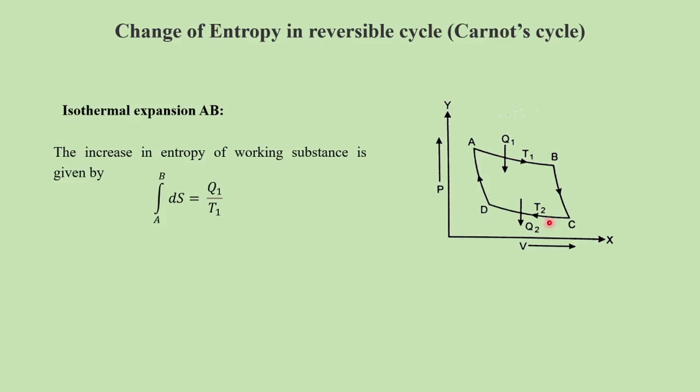The second stage is adiabatic expansion BC. During this adiabatic expansion, there is no change in entropy of the working substance, but the temperature falls from T1 to T2. Therefore, the integral from B to C of dS equals zero.